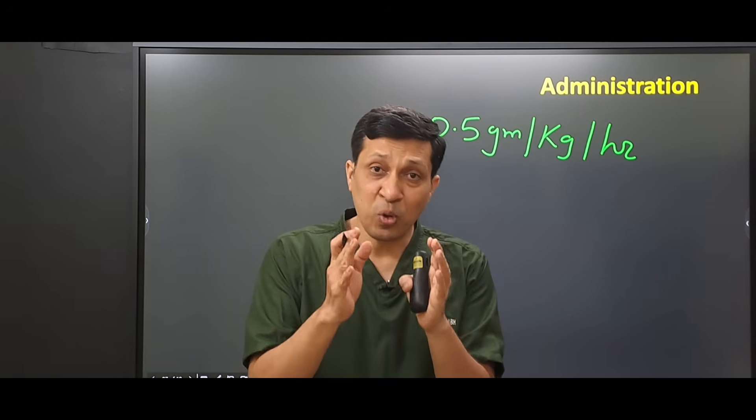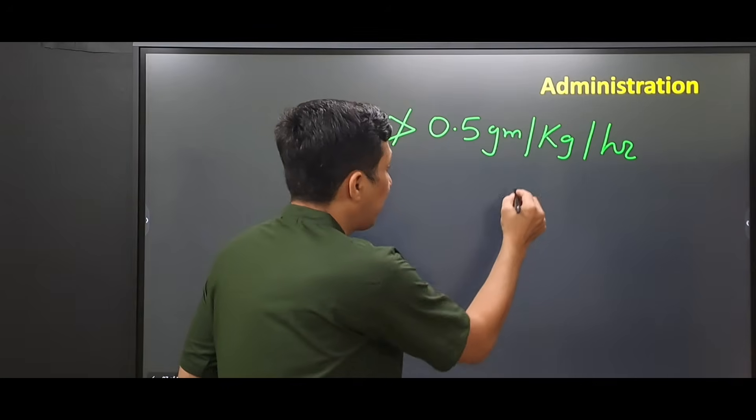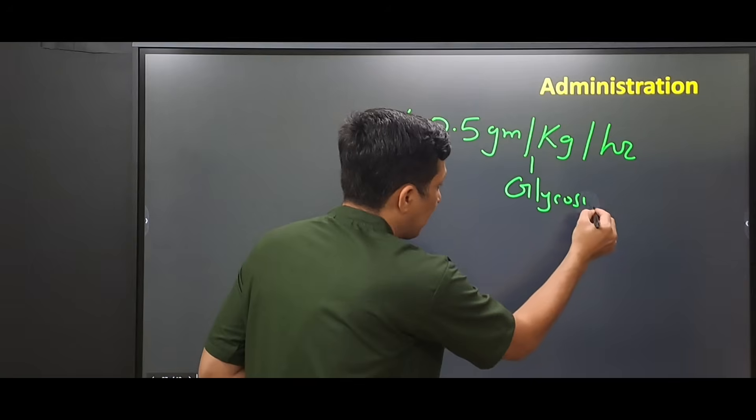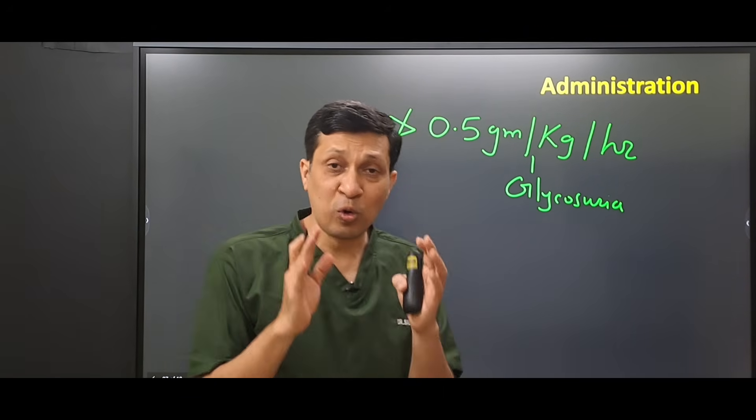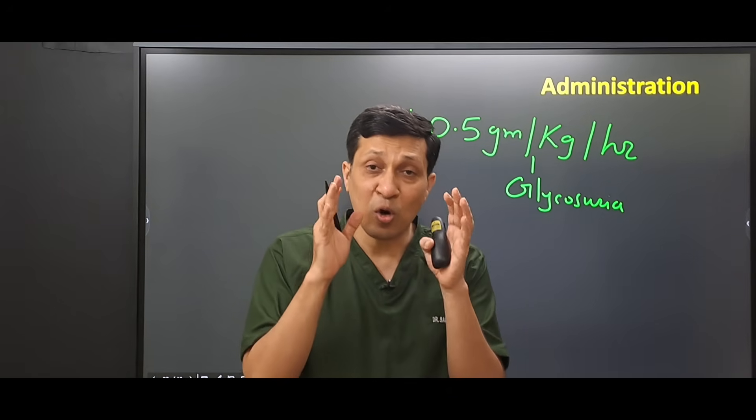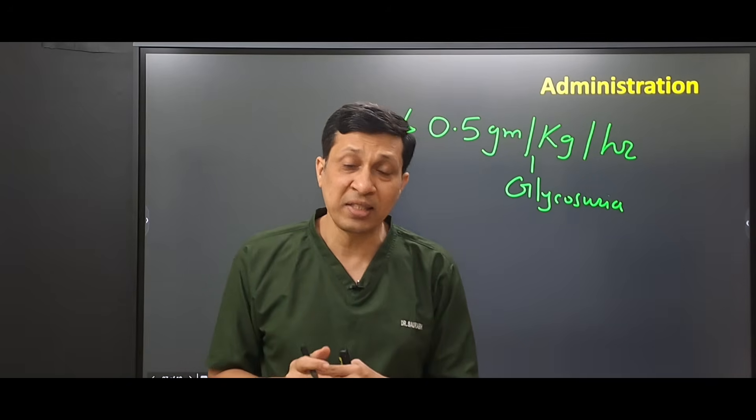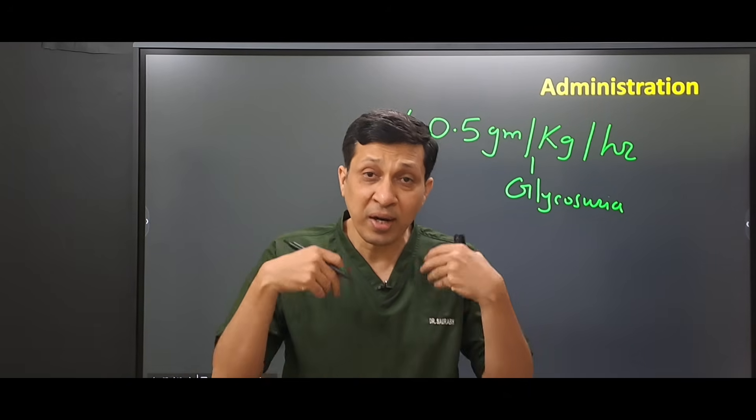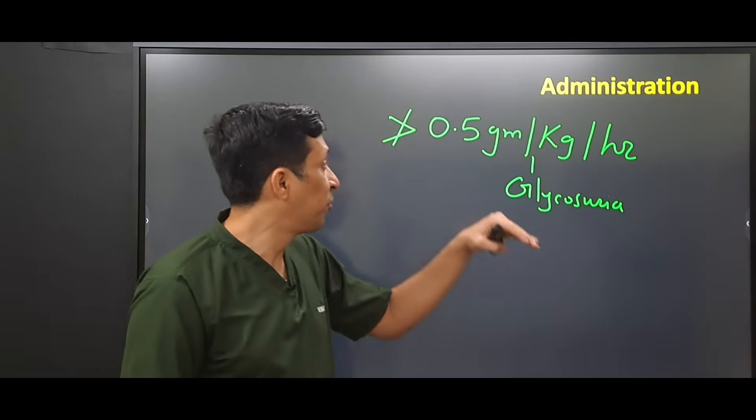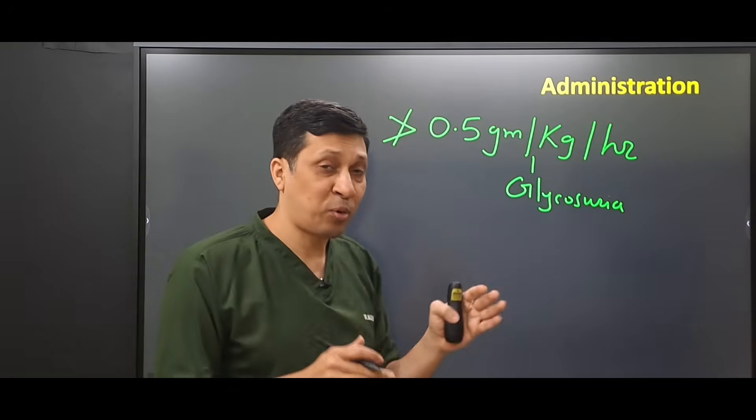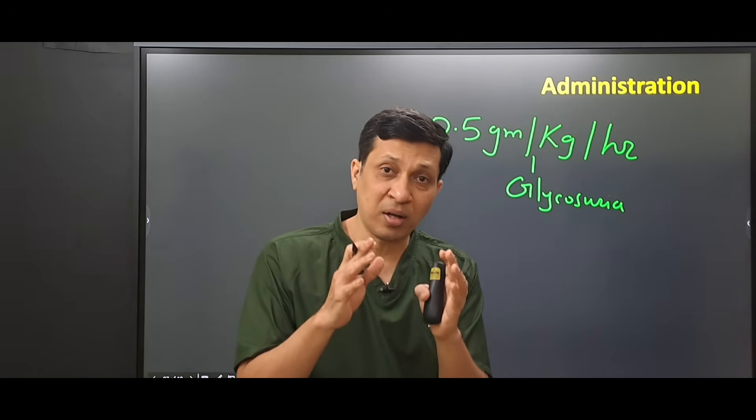And why is this important? Because if you exceed this rate, there will be glycosuria. The level of glucose in the blood will rise suddenly and this will lead to osmotic diuresis. So instead of correcting dehydration, there will be more dehydration in the patient if you give dextrose 5% by more than 0.5 gram per kg per hour.